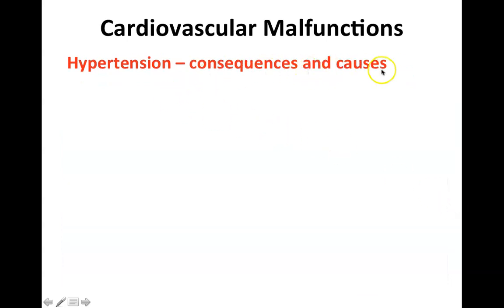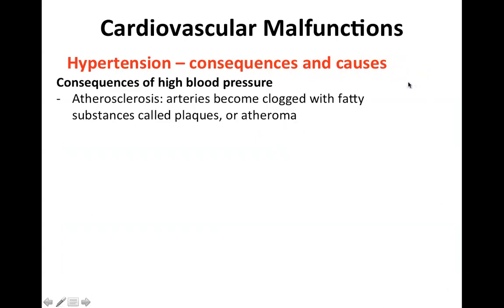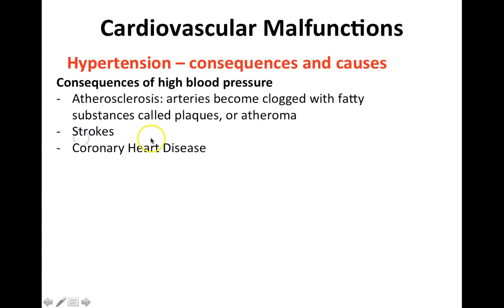Hypertension consequences and causes. Consequences of high blood pressure: first, atherosclerosis, which we'll cover in more detail in another lesson. This is when the arteries become clogged with fatty substances called plaque or atheroma. Fatty deposits build up in the arteries, which can cause a blood clot and lead to strokes and coronary heart disease, as well as heart attacks and kidney disease.